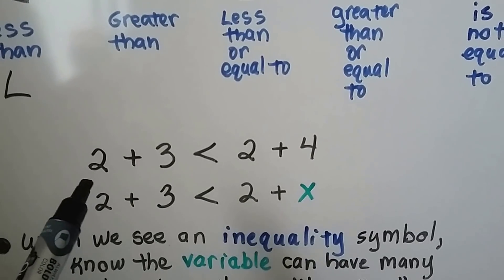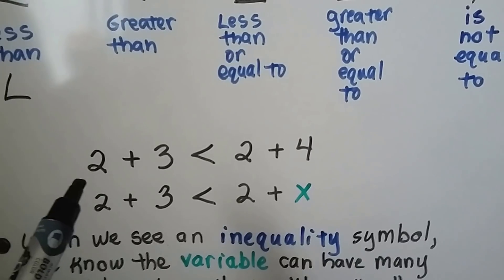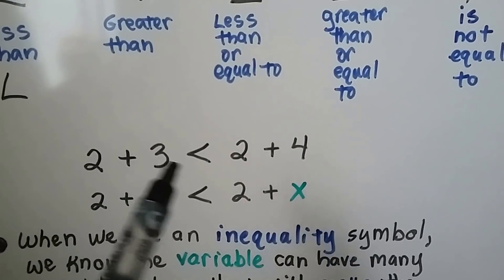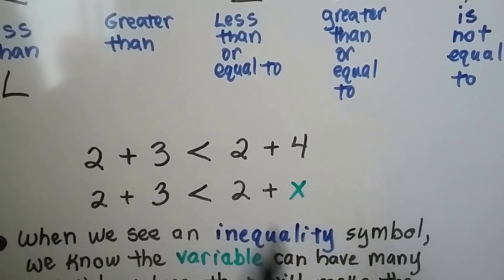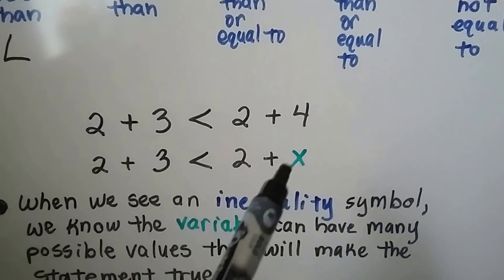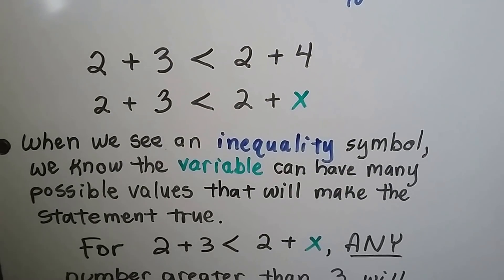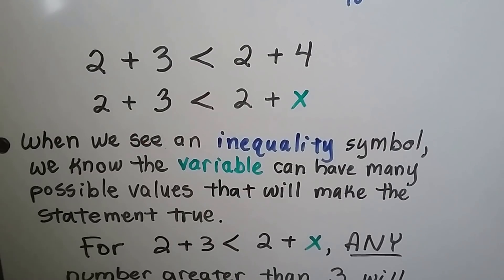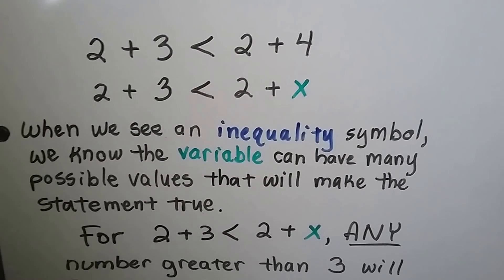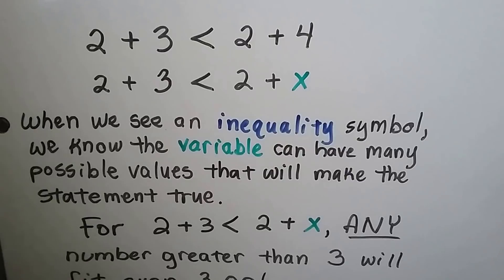Take a look at this. We have 2 plus 3 is less than 2 plus 4. Well yeah, that makes sense because that's 5 and that's 6, and 5 is less than 6. But what if we had a variable here? When we see an inequality symbol, we know the variable can have many possible values that'll make the statement true.